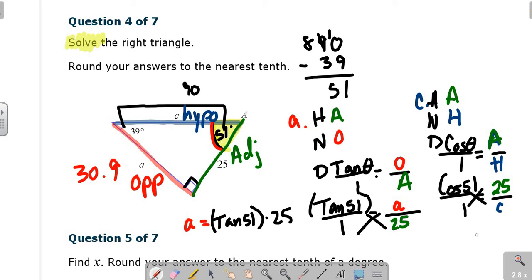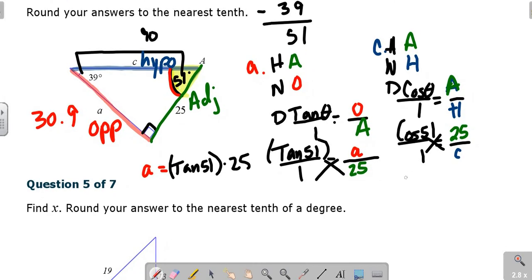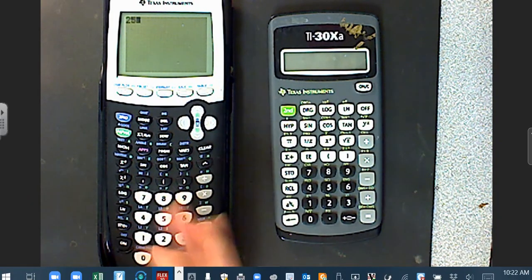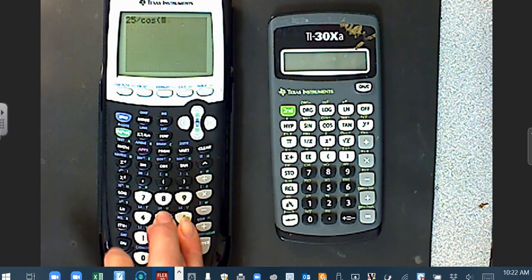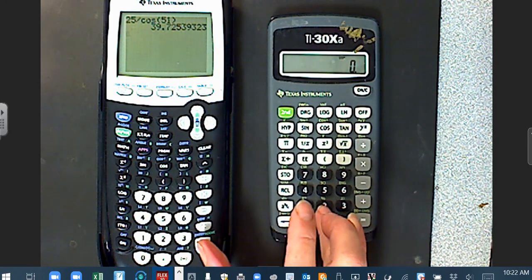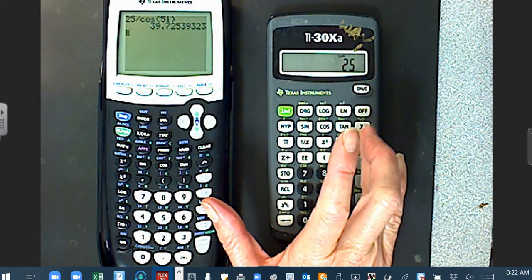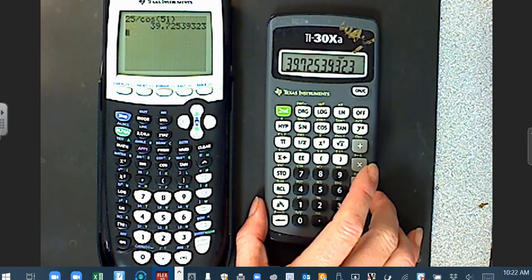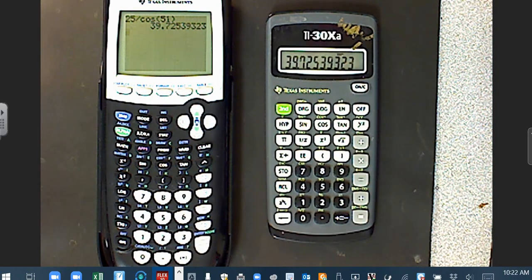So I come down here, and I do 25 divided by cosine 51. Those of you on this small screen calculator, looks like this: 25 divided by 51 cosine, and you're going to get the same answer. Now we're getting 39.7 for C.